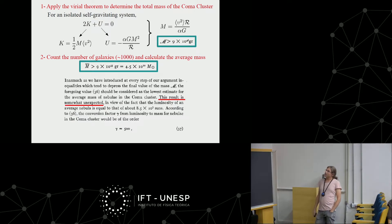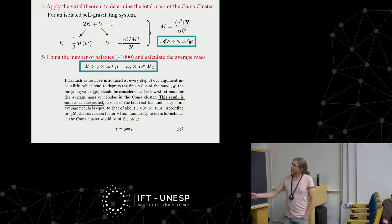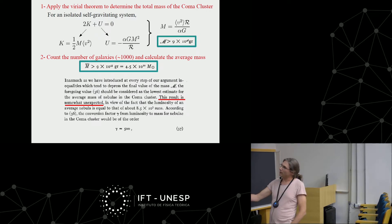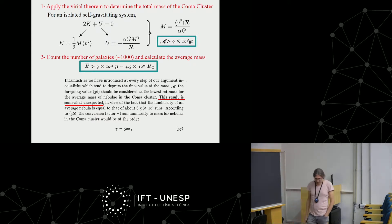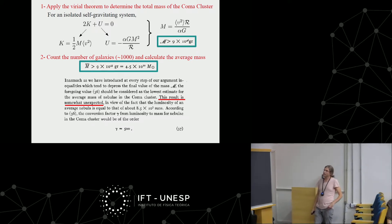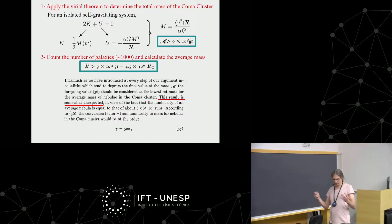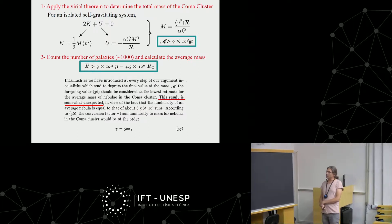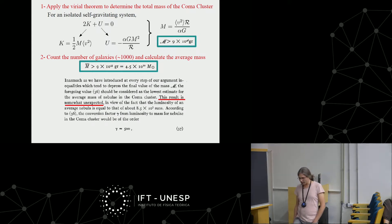He found this number quite intriguing and unexpected, given that the mass of one average galaxy is about 8.5×10^7 solar masses. This means that in the Coma cluster there is a mismatch of a factor of 500 between the amount of luminous matter and the total gravitational mass. This was the first place where it was manifest that there is more mass than mass in the form of stars.